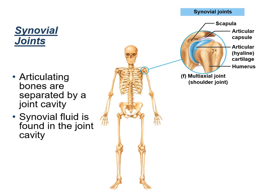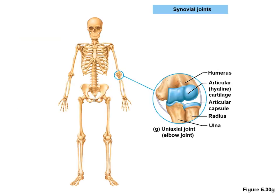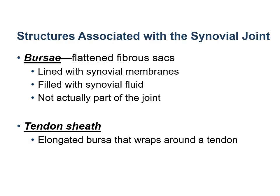Synovial joints are freely movable joints in which the bones are separated by a joint cavity. The articular ends of the bones are usually covered with hyaline articular cartilage, providing a frictionless surface for articulation. The joint cavity is lined by a synovial membrane made up of connective and epithelial tissues, which secretes synovial fluid that fills the cavity and reduces friction. The synovial joint is also covered with a flattened fibrous sac-like structure called the bursa, which is not actually part of the joint.